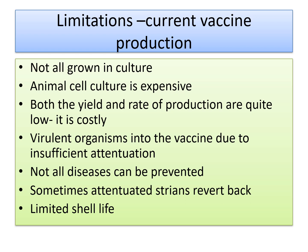Even after attenuation, when they are given as a vaccine, sometimes the attenuation may not be sufficient enough — they can be converted back to virulent form at any time. Likewise, we cannot have a vaccine program for all diseases. Sometimes attenuated strains also revert back, and the vaccines we have also have a limited shelf life. These are the very important limitations we have in vaccine production.